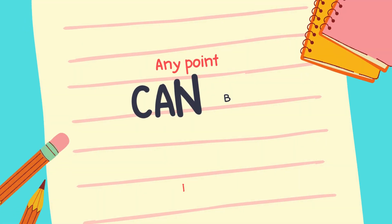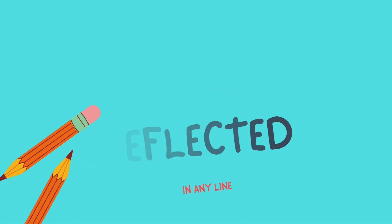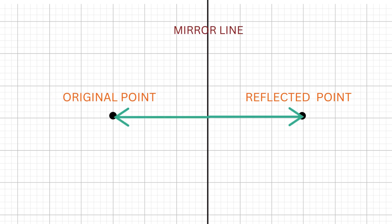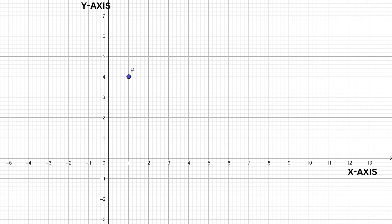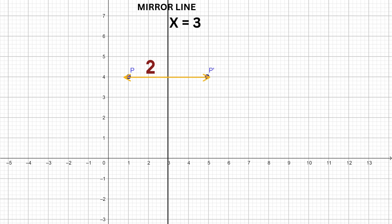Any point can be reflected in any line. We just need to ensure that the original point and the reflected point are the same distance away from the mirror line. So, if we pick an arbitrary point (1, 4) and reflect it onto an arbitrary line x equals 3, we just need to check the distance from the line to the point — which is 2 units in this case — and ensure that the reflected image point is also 2 units away from the mirror line x equals 3.